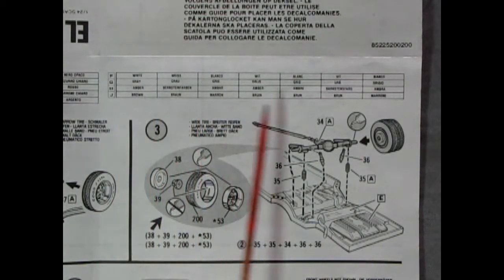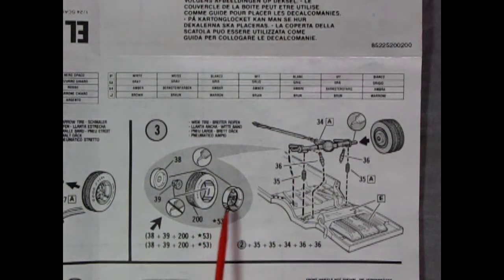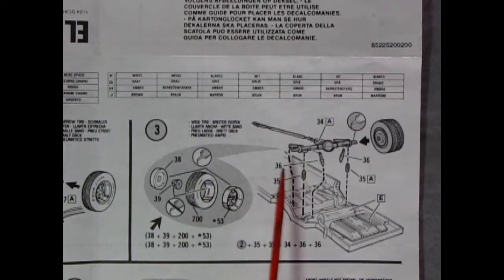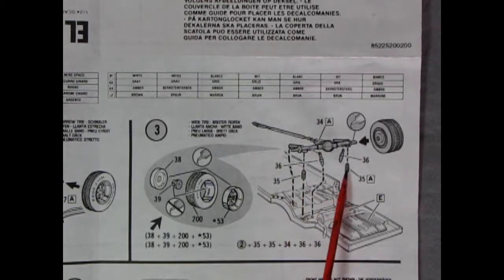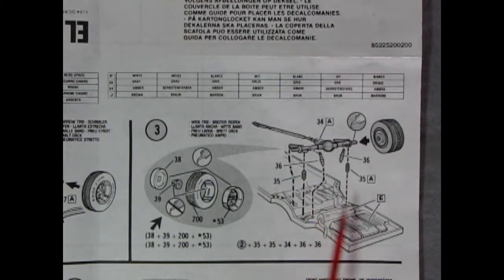Our paint call-outs continue across the top of the sheet where we also get an illustration of our rear wheels being assembled and then our axle, drive shaft, and springs and shocks all dropping onto the back side of the frame.